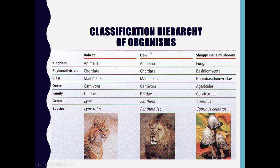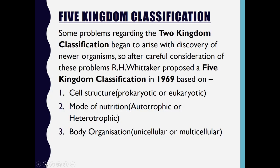Let us consider Lion as an example. Lion comes under Kingdom Animalia, which is divided into Phylum Chordata, then Class Mammalia, Order Carnivora, Family Felidae, Genus Panthera, and Species is Panthera leo. So the scientific name of lion is Panthera leo.